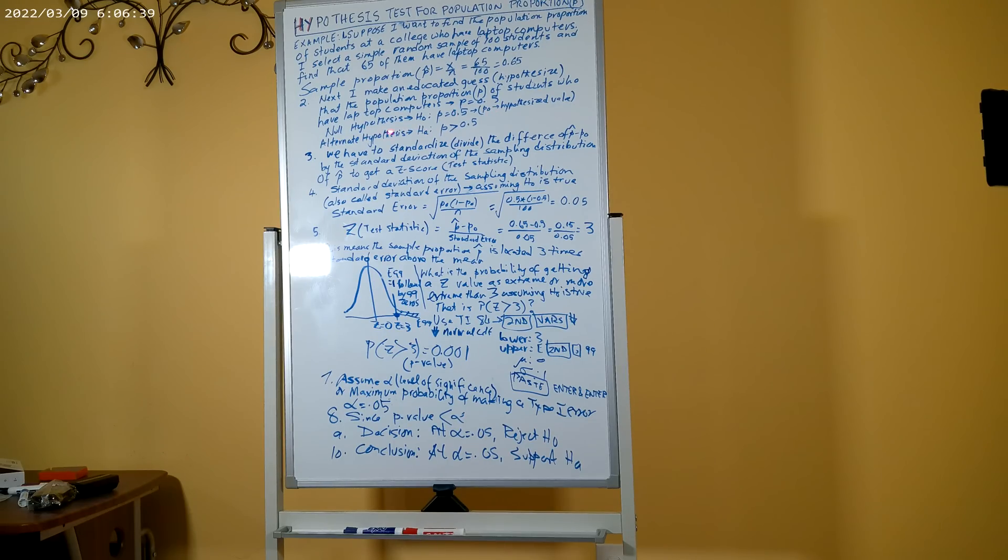Now we need to find out how far the sample mean p hat is located away from the hypothesized value of 0.5. But we have to standardize this difference of p hat minus p₀. Standardized means divide by the standard deviation of the sampling distribution of p hat to get a z score, which we call test statistic. Standard deviation of the sampling distribution is also called standard error, assuming H₀ is true.